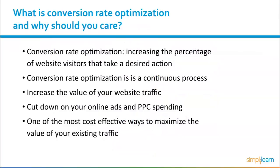Conversion rate optimization is a process that essentially means increasing the percentage of website visitors that take a desired action, starting with micro conversions such as viewing a particular piece of content, and leading up to all kinds of conversions like filling out a form or buying an offer. In other words, it's a process that helps you increase the value of your website traffic. It can be something as simple as changing the color of your call to action button or improving your website speed, or it can be a bigger project like a complete revamp of your website design.